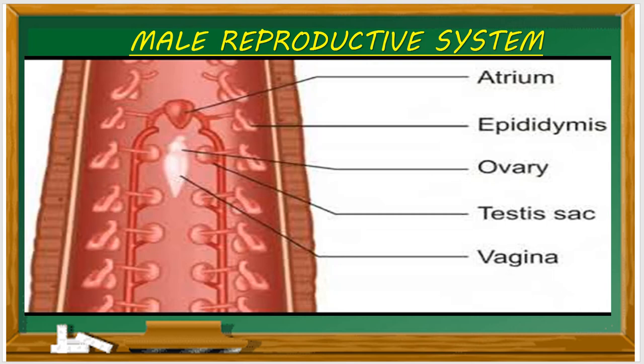The ejaculatory ducts of both sides join to form the genital atrium. This genital atrium consists of two regions: the coiled prostate gland and the penial sac. The penial sac consisting of the penis opens through the male genital pore.